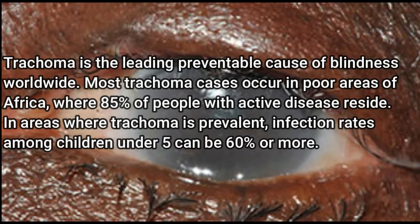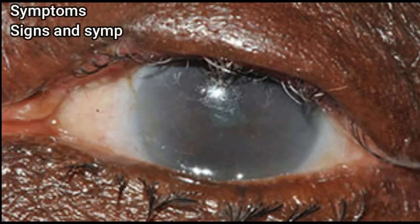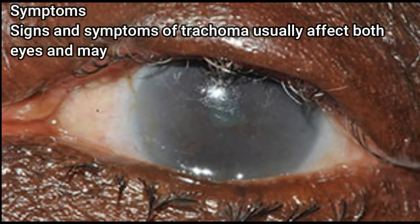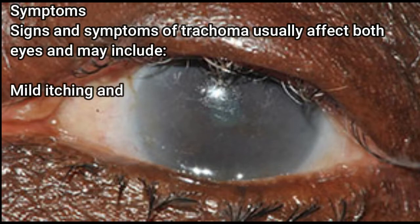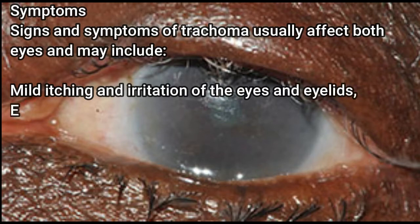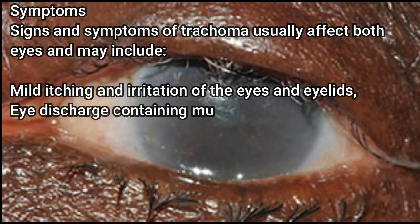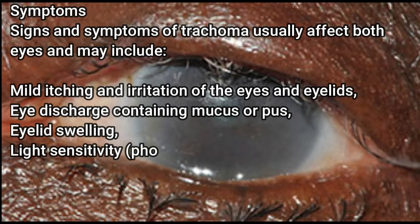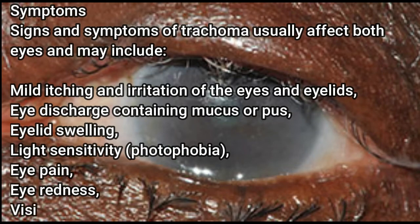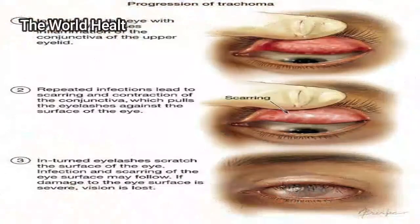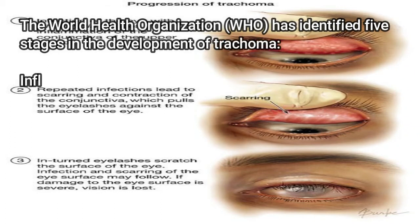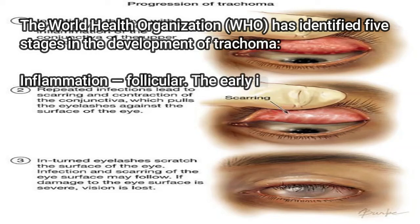In areas where trachoma is prevalent, infection rates among children under five can be 60% or more. Signs and symptoms of trachoma usually affect both eyes and may include mild itching and irritation of the eyes and eyelids, eye discharge containing mucus or pus, eyelid swelling, light sensitivity (photophobia), eye pain, eye redness, and vision loss.